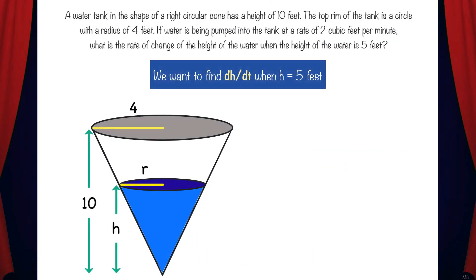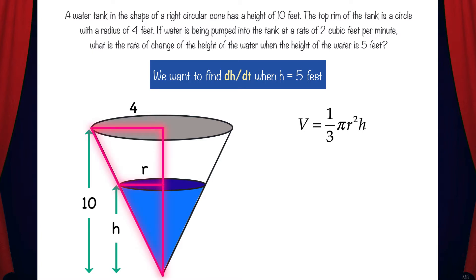Here we have a diagram of the cone and we can see that the height is 10 and the radius is 4. The water forms a second cone with a height h and a radius r. Now we need an equation that relates the variables. We know from geometry that the volume of a cone is V equals one-third pi r squared h. Since the volume equation has both r and h, it would be helpful if we could make a substitution so that we can get the V equation in terms of one variable only.